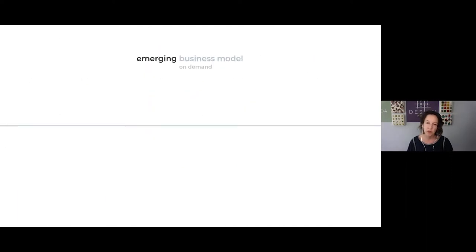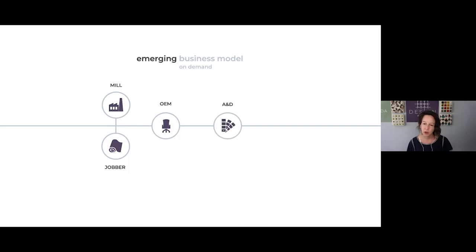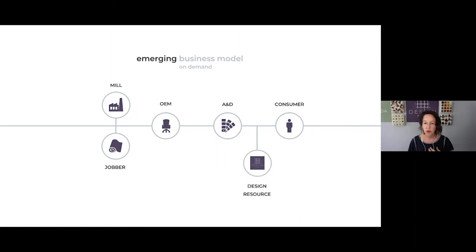With that, we have the emerging business model — what I consider the on-demand model. The mill and the jobber are going to kind of become one: either the mill becomes the jobber or the jobber becomes the mill. Especially with printing, because there's such a low point of entry from a cost perspective — it's not like wovens where you're looking at a lot of overhead, gantries, and things like that. You're still going to have the OEMs manufacturing the furniture, and you're still going to have the architects and designers because they are the creative types working with the consumer.